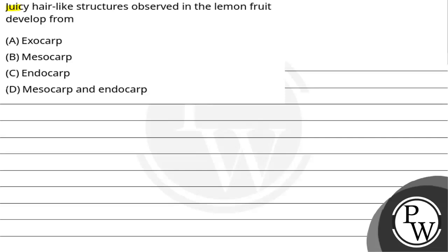The question says: juicy hair-like structures observed in the lemon fruit developed from option number A, exocarp; option number B, mesocarp; option number C, endocarp; and option number D, mesocarp and endocarp.